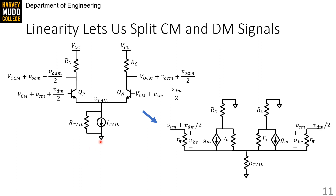I've drawn an emitter coupled pair on this slide with the associated small signal model. I've relaxed the input constraints from the last video to allow both a small signal common mode signal and a small signal differential mode signal. This means we'll be able to analyze any arbitrary pair of small signals on top of a DC common mode, combining small signal analysis and differential analysis at the same time.